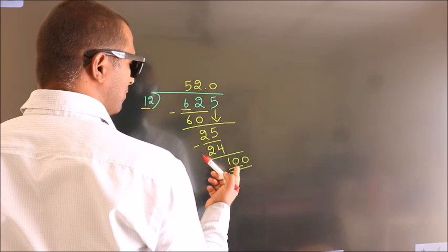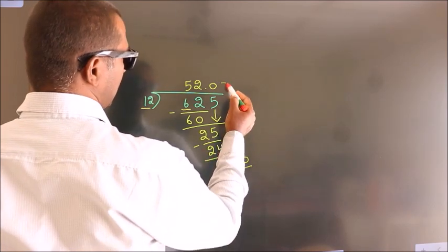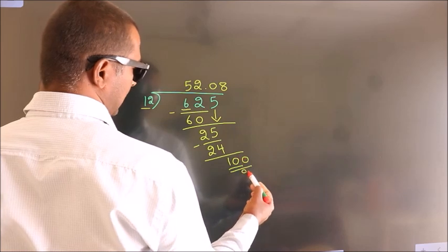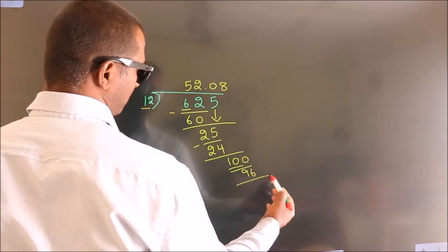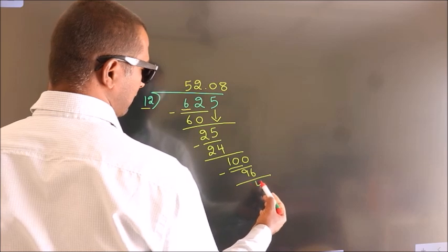A number close to 100 in the 12 times table is 12 times 8, which is 96. Now we subtract and get 4.